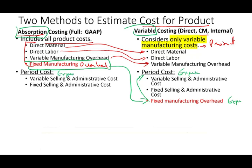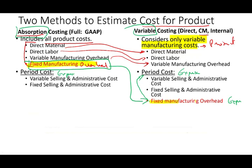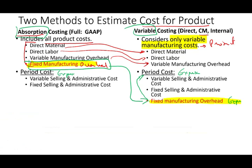What makes the difference between absorption costing and variable costing is how we treat fixed manufacturing overhead. Under absorption costing, it's first inventoried as an asset, then turned into cost of goods sold once sold. If not sold, it stays in inventory as an asset.